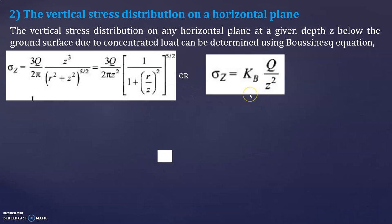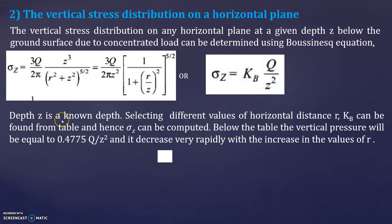This equation can also be written as sigma z equals kb times q divided by z squared, where kb is Boussinesq's influence factor. The kb value can be found from a table based on the r/z ratio. Depth z is a known value; by selecting different values of horizontal distance r, kb can be found from the table and sigma z can be computed.